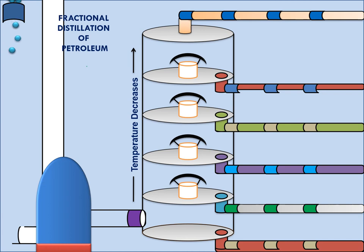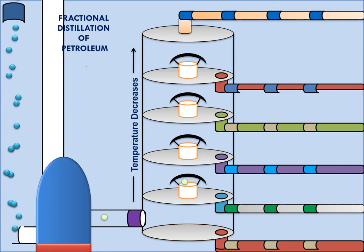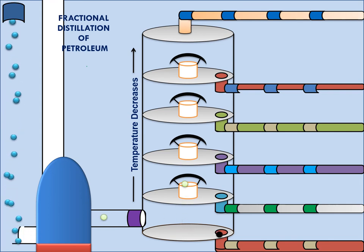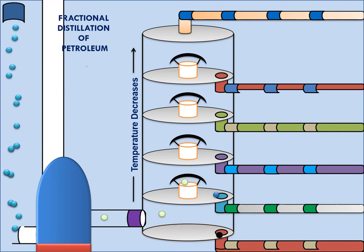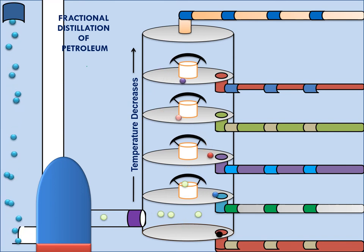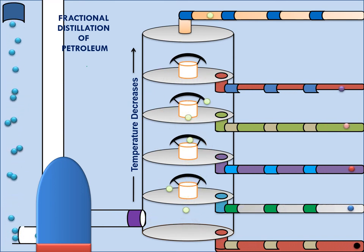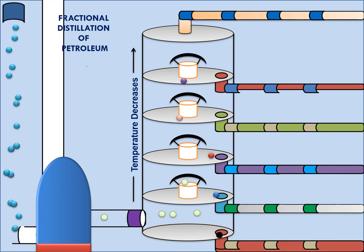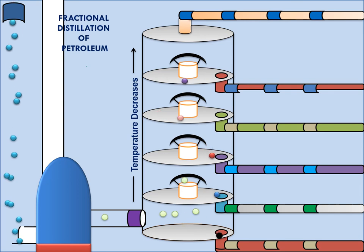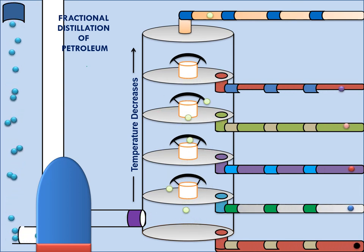As shown in the animation, crude oil vapors enter the chamber. Fractions with very low boiling points do not separate as liquids and continue upward. The fraction represented by the black ball has a high boiling point, so it immediately separates as a liquid at the bottom. Different fractions with different boiling points separate at different places in the column.